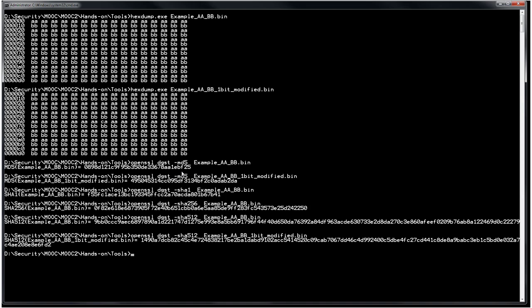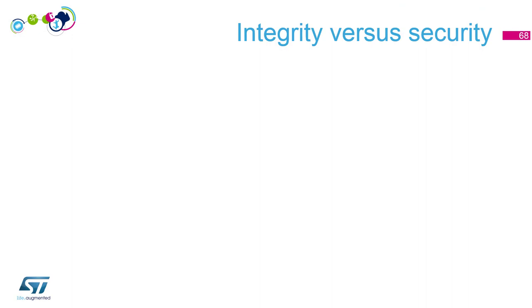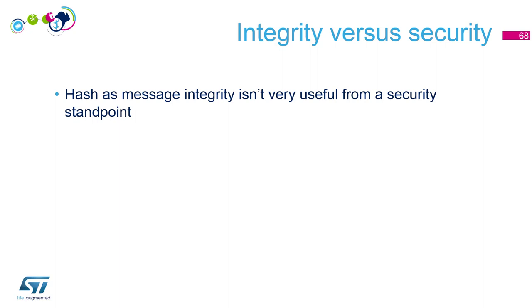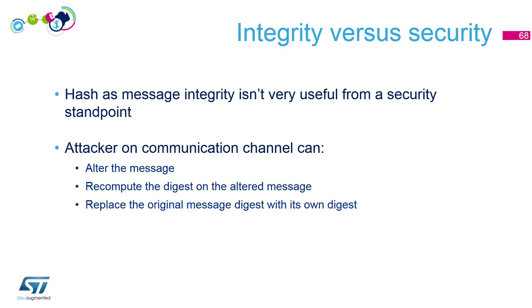If I do it with the one-bit-modified version, the value is quite different. This is trivial but possible to experiment with OpenSSL — and it's useful when you download something from the internet where an MD5 is provided to check integrity. However, from a security point of view, a hash alone is not very useful: Eve could modify Alice's message, recompute the digest, and send both to Bob — so there's no insurance that nobody regenerated the digest.